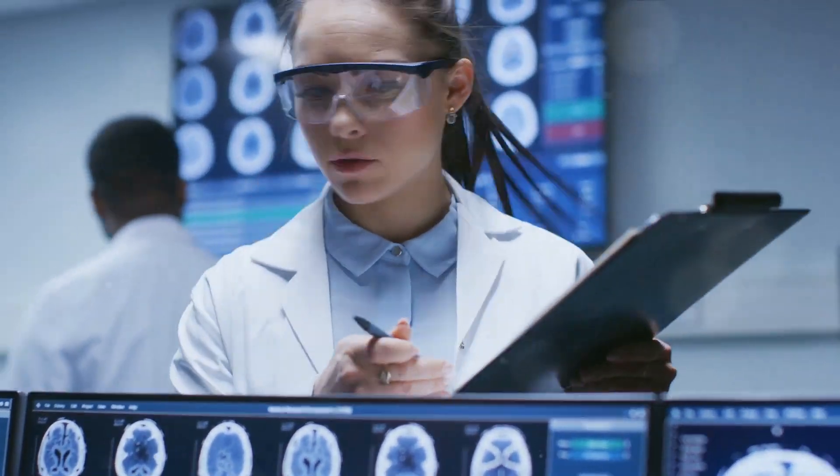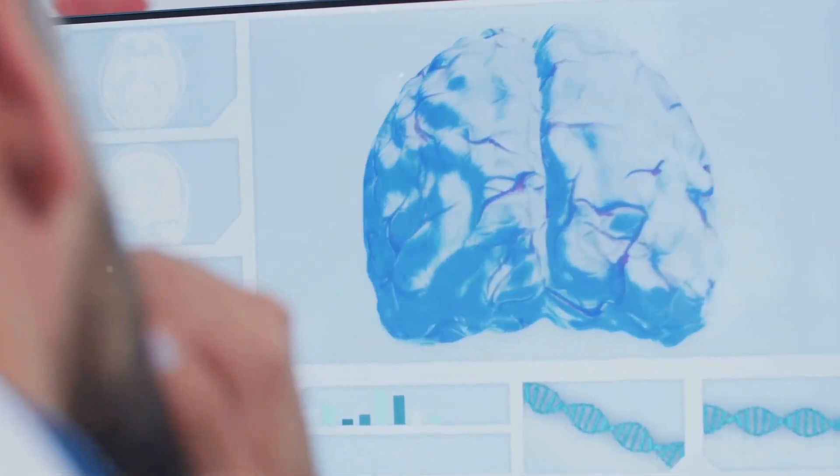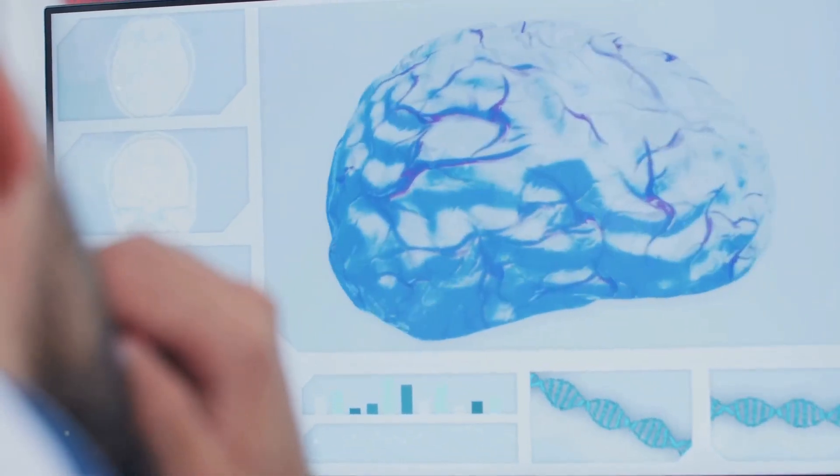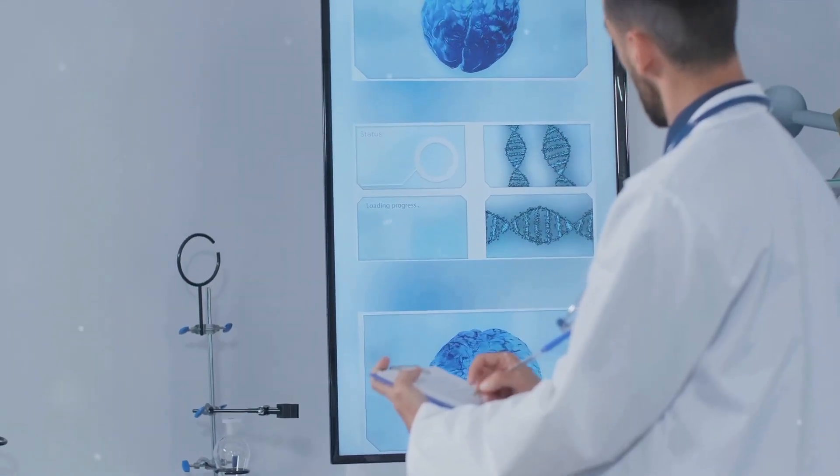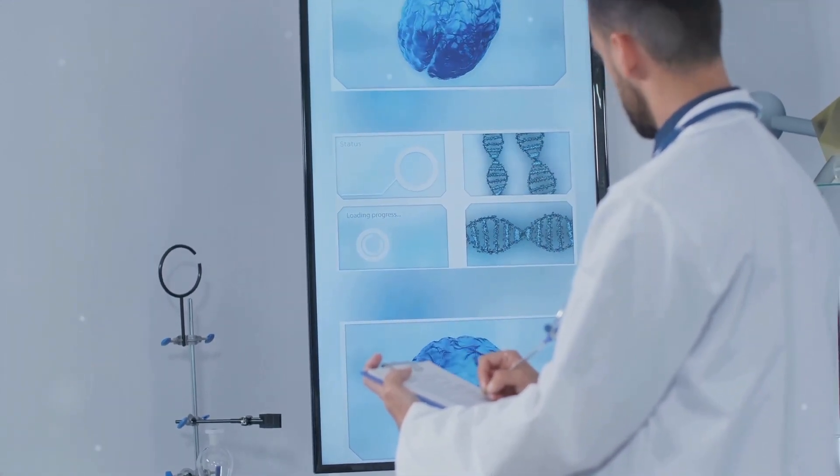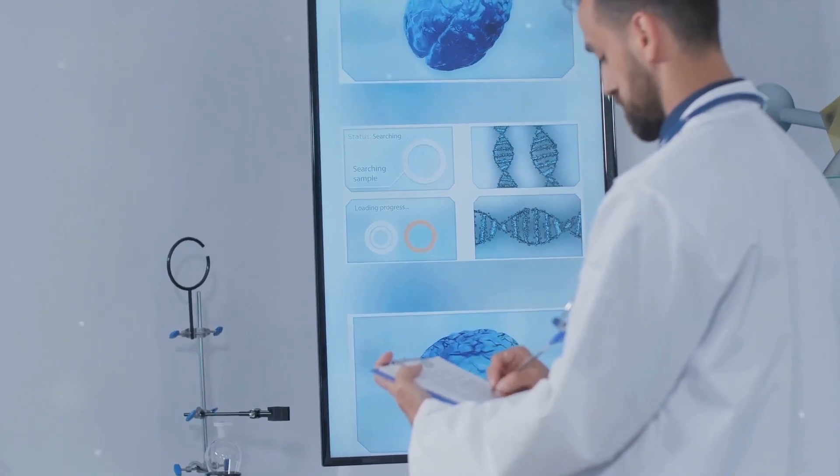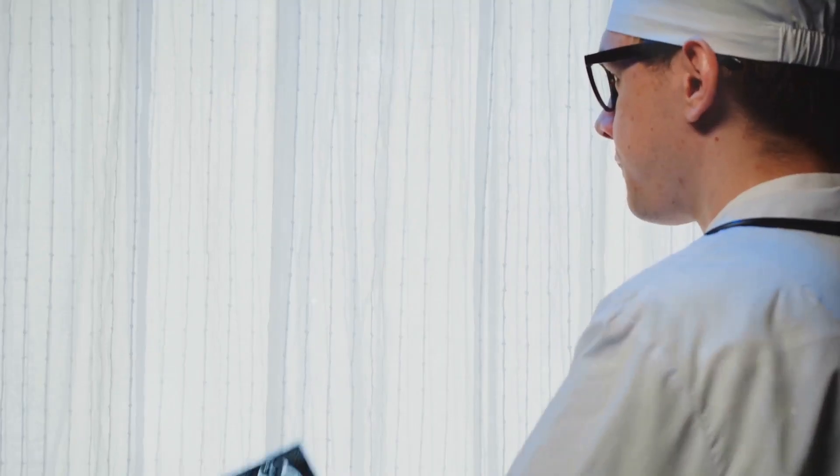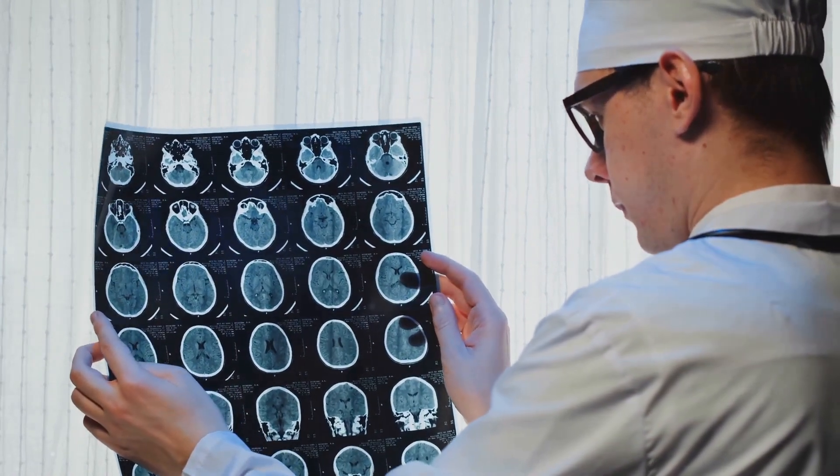But every step taken, every challenge faced, brought them closer to their goal. And when they finally emerged victorious, they had in their hands a detailed atlas of brain cells, a groundbreaking discovery. This atlas, a map of uncharted territories, holds the key to understanding the brain's diversity and function. It is a beacon of hope, lighting the path towards the treatment, prevention, and cure of brain disorders.